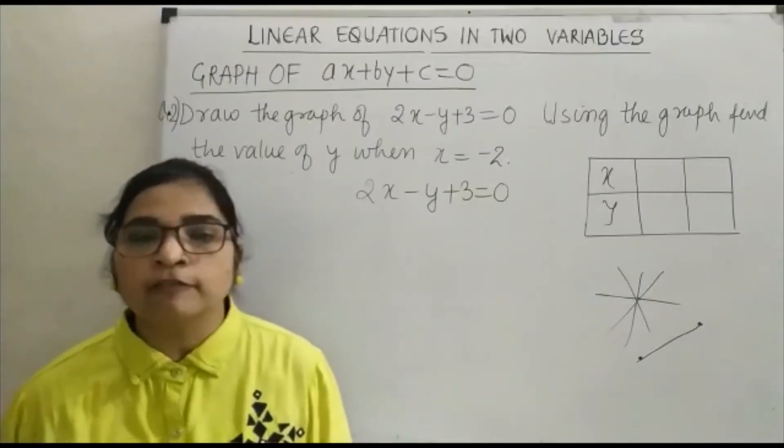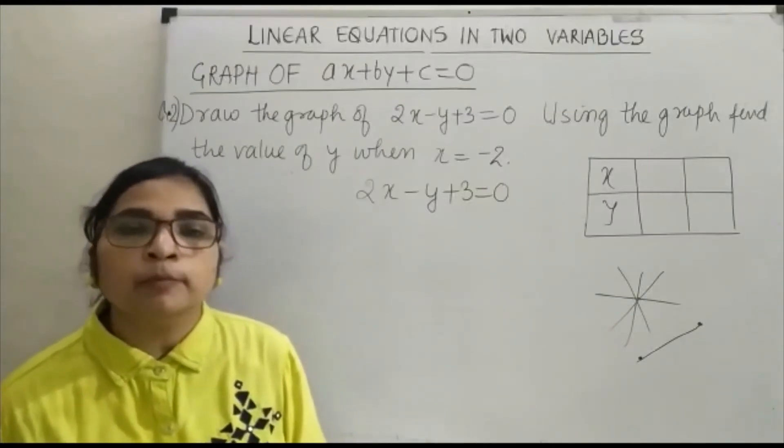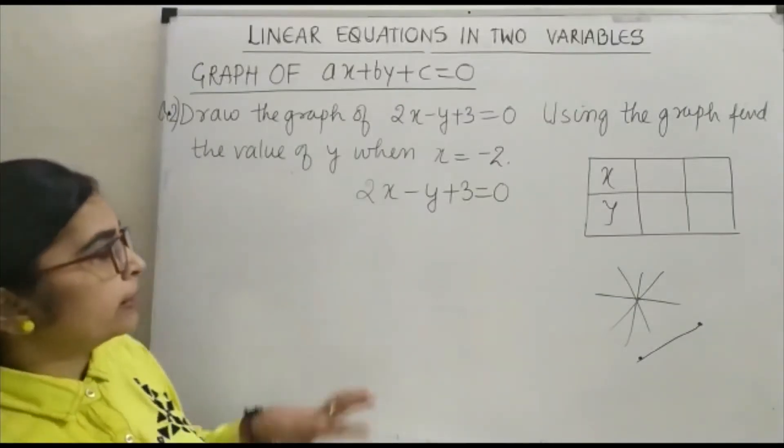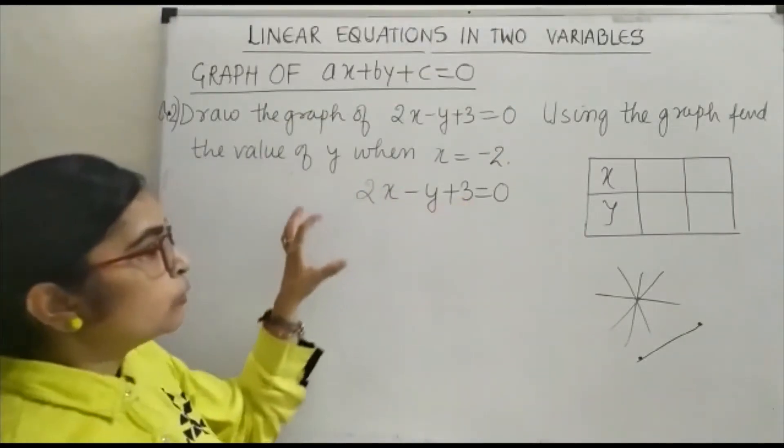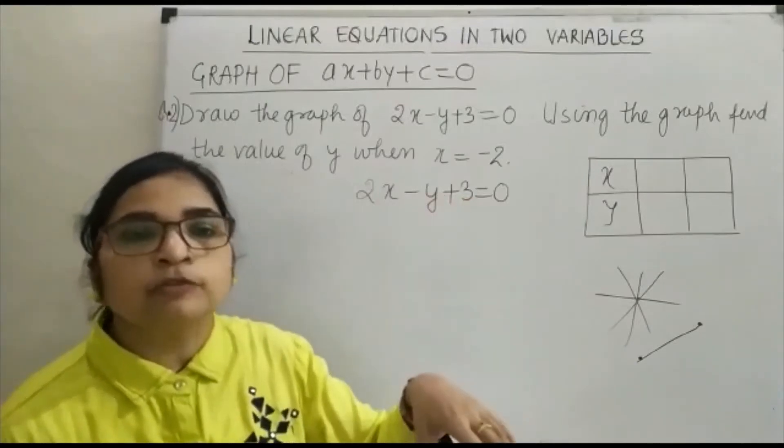That is why to plot the graph, minimum 2 points are required. So we are going to find out those 2 points for the given equation. For that, you have to write y in terms of x.